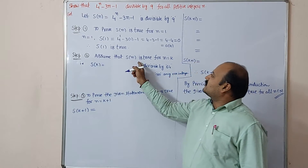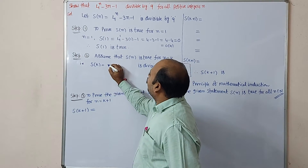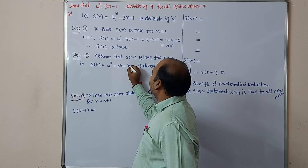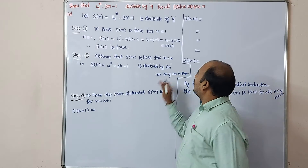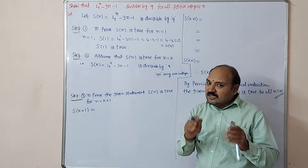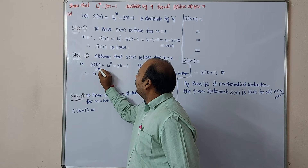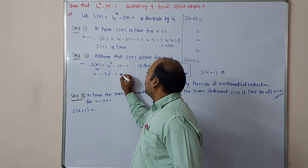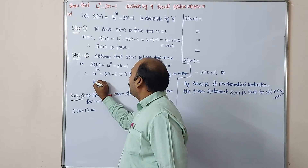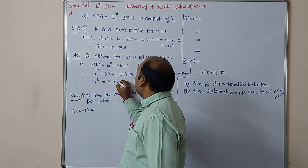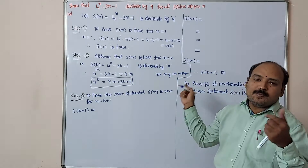Come to Step 2. Assume that S of n is true for n is equal to k. S of k: wherever n is there replace with k — 4 power k minus 3k minus 1 is divisible by 9. We can write it as a multiple of 9: 4 power k minus 3k minus 1 equals 9M. Making 4 power k the subject: 4 power k equals 9M plus 3k plus 1, where M is any positive integer.